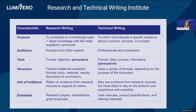I added this table last minute because for this year we are including technical writers in the Writing Institute, and so I thought it would be helpful to point out some key differences between research writing and technical writing. I have these characteristics on the side: purpose, audience, tone, structure, use of evidence, and then some examples of different outputs associated with these two types of writing.